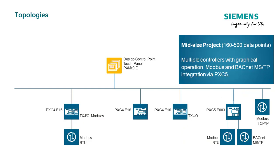For a relatively bigger system, it is also possible to have a mix of BACnet IP and MSTP topology. The system controller PXC5 can integrate BACnet MSTP and Modbus simultaneously, leading to a cost-effective solution. The monitoring and operating of this extended system can also be handled by a DSEGO control point with embedded web server.